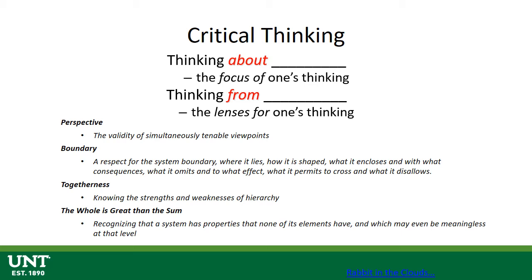The next one is togetherness. Togetherness talks about how things connect — relationships. What influences what? Is it a strong relationship? Is it a weak relationship? And how do those strong and weak relationships sometimes tension and battle each other, and how do they influence each other? We need to understand how things are connected and where our influences are.